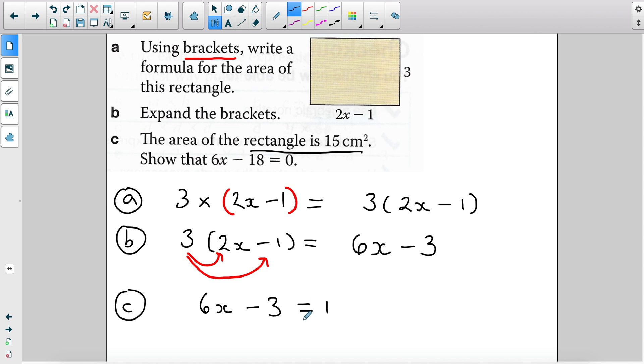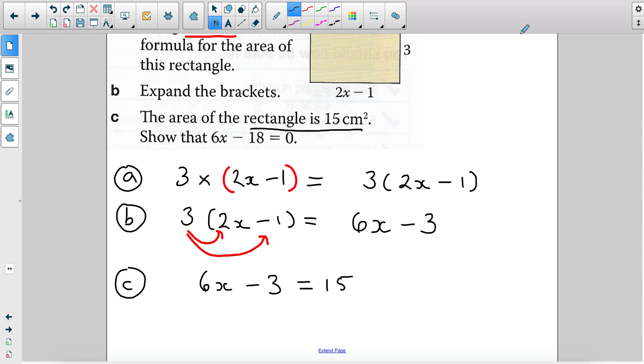Let's just fix that. Okay, 15. So we know that the area has to be equal to 15. Now we can easily see how we can get from 6x minus 3 equals 15 to 6x minus 18 equals 0.